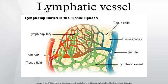The afferent lymph vessels enter at all parts of the periphery of the lymph node, and after branching and forming a dense plexus in the substance of the capsule, open into the lymph sinuses of the cortical part. They carry unfiltered lymph into the node. In doing this they lose all their coats except their endothelial lining, which is continuous with a layer of similar cells lining the lymph paths. Afferent lymphatic vessels are only found in lymph nodes.